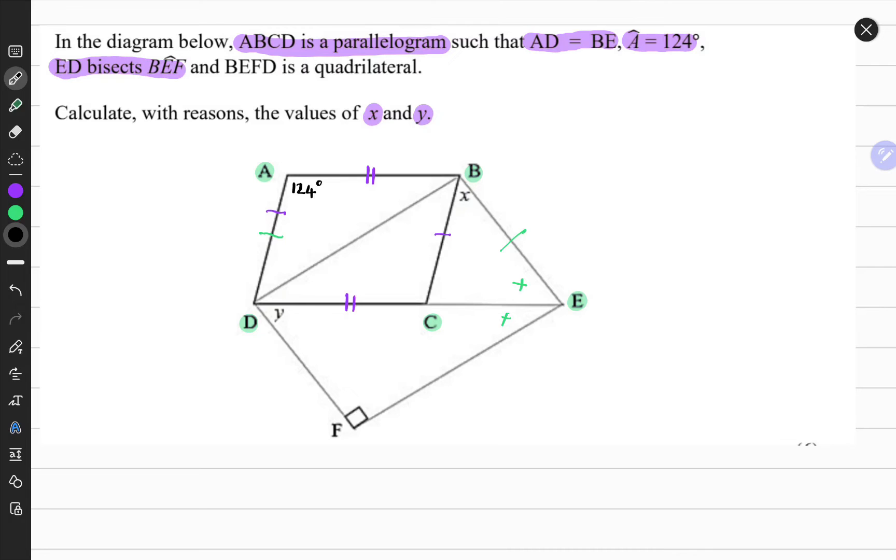Interior opposite angles are equal in size. So if angle DAB is 124 degrees, it would mean that angle DCB will also be 124 degrees. The reason is interior opposite angles of a parallelogram are equal.